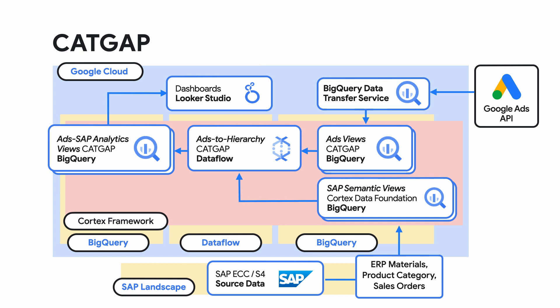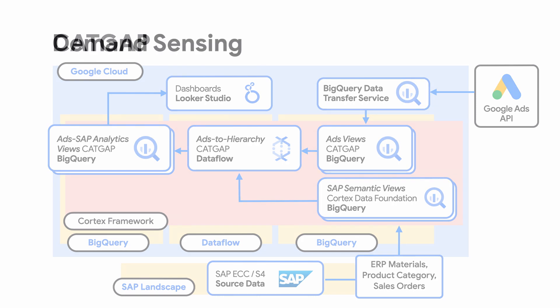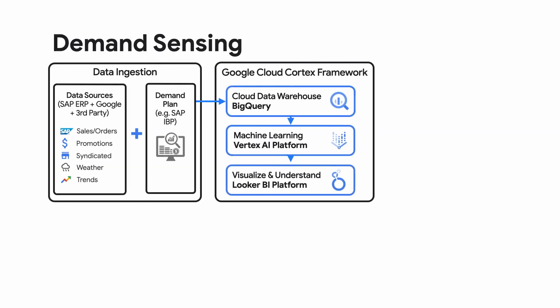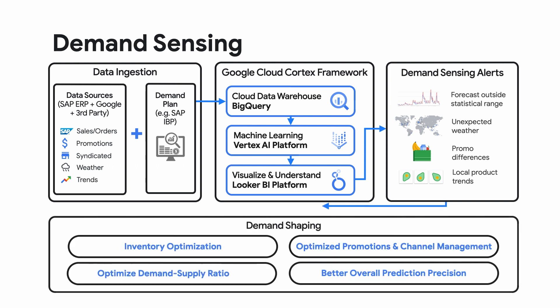It brings into the mix the simplicity of verifying automated matches in a spreadsheet, all connected to reports in Looker Studio with data in BigQuery, the foundational platform on Cortex Framework. Another example is Cortex Demand Sensing. It provides sample content for Vertex AI AutoML forecasting based on historical sales from SAP and other signals that could impact demand, such as weather and trends. The Demand Sensing Analytics component compares the forecast with the demand plan and provides a comprehensive set of alerts when deviation of the forecast from the plan is significant.